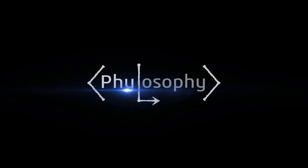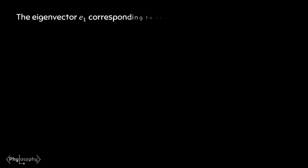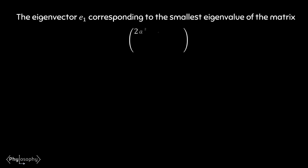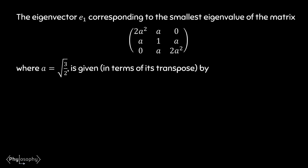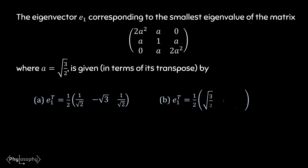Hello everyone, this is Joy. In this video we are going to solve another interesting problem on matrices and determinants. The problem is: find the eigenvector e1 corresponding to the smallest eigenvalue of the matrix with elements 2a², a, 0, a, 1, a, 0, a, 2a², where a = √3/2. The answer is given in terms of options and you have to choose the correct one.